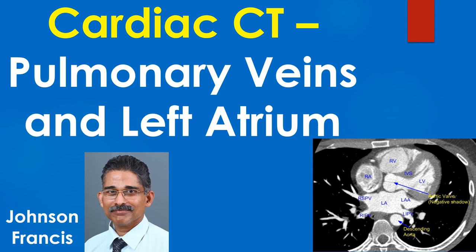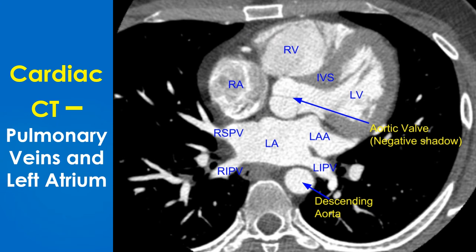This cardiac CT scan is shown at the level where pulmonary veins join the left atrium, displaying all four cardiac chambers and the left atrial appendage. Structures labeled include: RSPV – Right superior pulmonary vein, LA – Left atrium, LAA – Left atrial appendage, RI-PV – Right inferior pulmonary vein, LI-PV – Left inferior pulmonary vein, RA – Right atrium, RV – Right ventricle, LV – Left ventricle, and IVS – Interventricular septum.